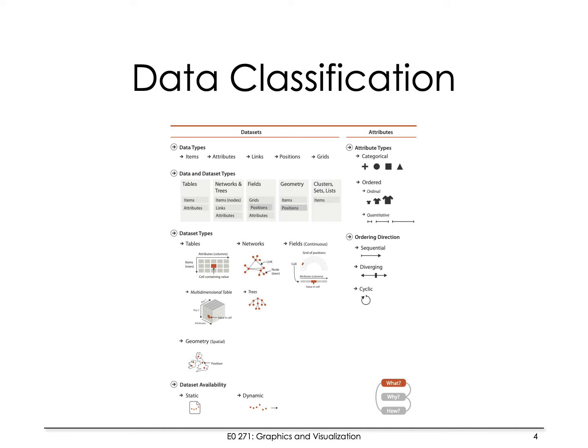Tamara Munzner presents a very nice classification of data — think of this as a cheat sheet. She classifies data based on the type: items, records, links, positions, and so on. Data can also be classified based on the dataset — the collection of data records — whether it is available as a table, as a network or collection of links, as a field in a 2D or 3D domain, as geometry, or as clusters or sets of records. In each case there are different types of tasks that can be accomplished.